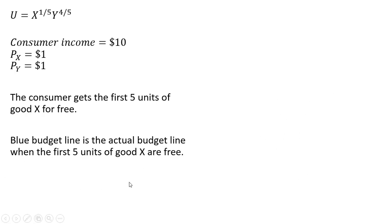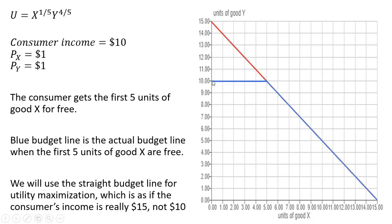The blue budget line is the actual budget line when the first five units of good X are free. If the consumer spends all their income on good Y, the consumer could buy 10 units of good Y — income of $10 and the price of good Y is $1. And because the first five units of good X are free, the consumer could afford a point at this kink: 10 units of good Y and 5 units of good X.